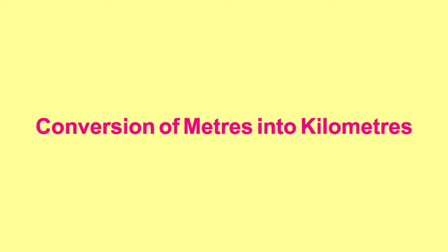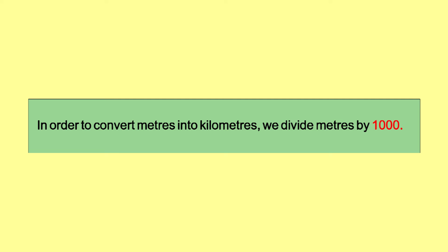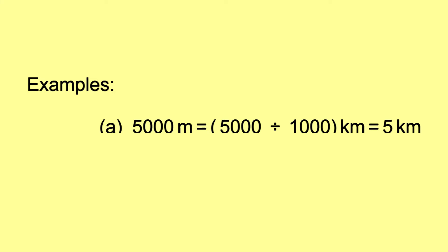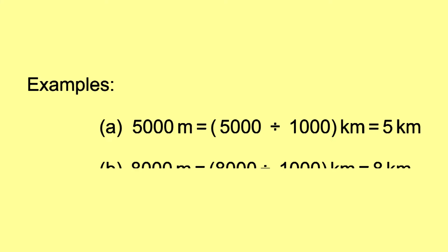Conversion of meters into kilometers. In order to convert meters into kilometers, we divide meters by 1,000. Example: 5,000 meters is equal to 5,000 ÷ 1,000 kilometers, which is equal to 5 kilometers. 8,000 meters is equal to 8,000 ÷ 1,000 kilometers, which is equal to 8 kilometers.